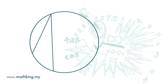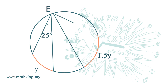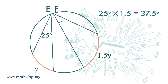In this diagram, the length of this arc is Y, and angle E at the circumference is 25 degrees. If we have another arc that is 1.5Y — 1.5 times longer — then angle F at the circumference is 25 times 1.5, which is 37.5 degrees.